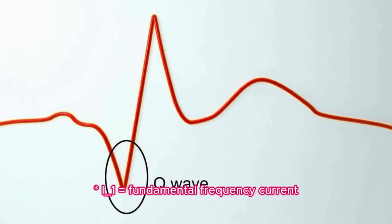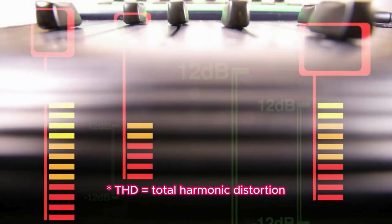I_h = harmonic current, I_1 = fundamental frequency current, THD = total harmonic distortion.